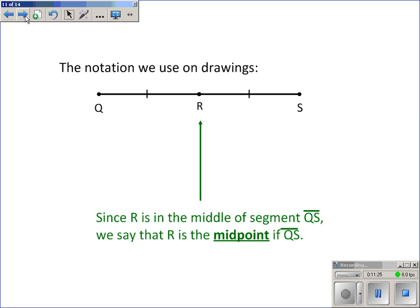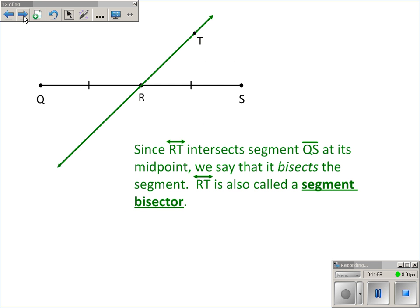Midpoints. In this picture, what these little dashes mean is that this segment is the same as this segment. These segments are congruent. That's what the dashes mean. Now, since R is in the exact middle of the segment, it's called the midpoint, because it's the point in the very middle of the segment. So it's the midpoint.